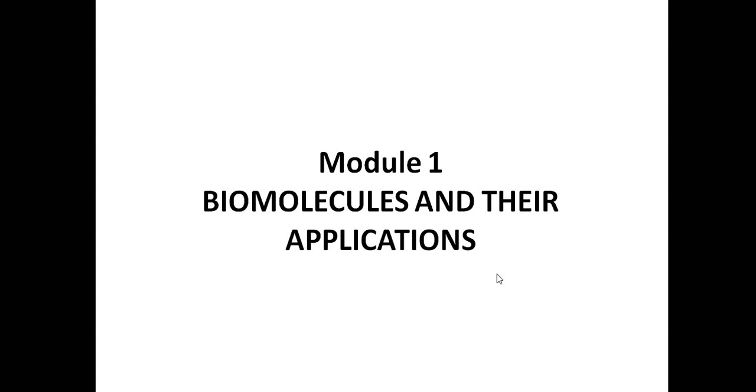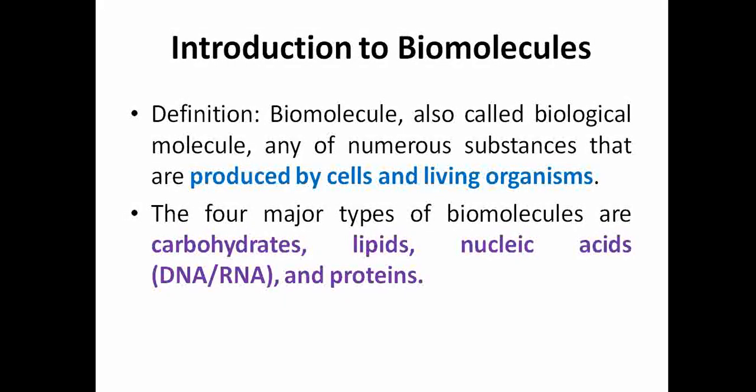Hello everyone, today we are going to discuss Module 1 of Biology for Engineers. Module 1 speaks about biomolecules and their applications. You might have heard about molecules — the difference is that biomolecules are produced by cells or living organisms, or they have some living property like DNA which contains genes that can be carried forward. A biomolecule, also called a biological molecule, is any of numerous substances produced by cells and living organisms.